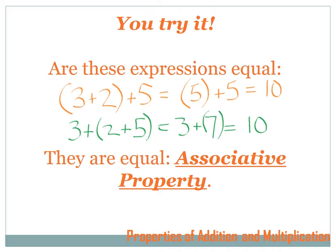I hope you concluded that they were equal. For bracket 3 plus 2 bracket plus 5: 3 plus 2 equals 5, so we get 5 plus 5, which equals 10. The other way it was written was 3 plus the expression 2 plus 5. 2 plus 5 equals 7, and 3 plus 7 equals 10. So they are equal, and that's because of the associative property.